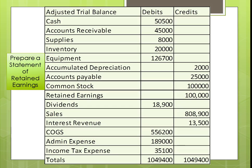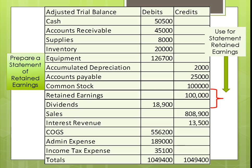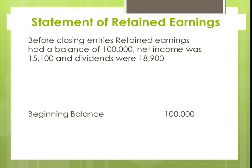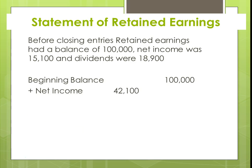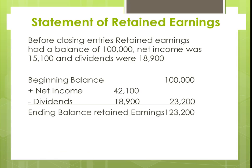The next thing we're going to prepare is our Statement of Retained Earnings. The first thing we always do is look to see if we have a beginning balance in retained earnings, which we'll always have unless it's the first year of business. Retained earnings represent prior years' profits and losses minus any dividends paid out. We start with our beginning balance, plus net income from the income statement, minus dividends, to get an ending balance in retained earnings of $123,200. Remember, this is always the number you use when you do the balance sheet; otherwise, you won't balance.